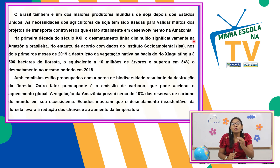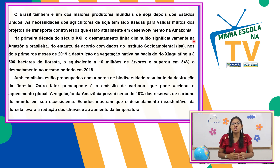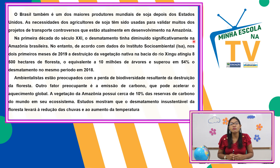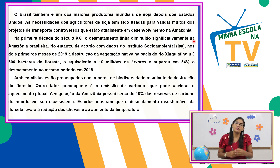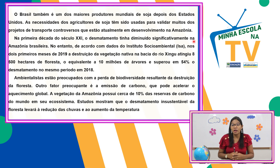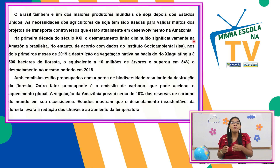O Brasil é um dos produtores mundiais de soja depois dos Estados Unidos. As necessidades dos agricultores de soja têm sido muito usadas para validar projetos de transporte controversos em desenvolvimento na Amazônia — como usar aquele solo para plantio e colheita se não tem como tirar a mercadoria de lá? Deve ser feito investimento nas estradas. E para fazer a estrada, precisa de desmatar.